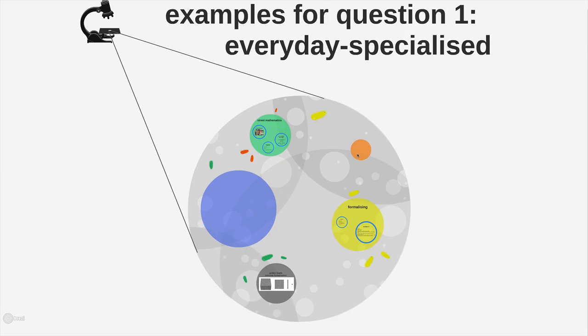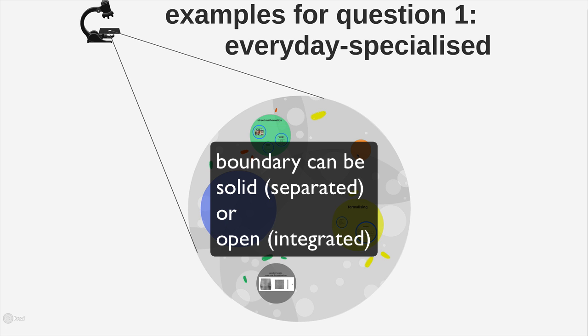Well, let's look at some examples now of how to work with the relationship between the everyday and the specialized. Remember in the previous video, we made a distinction about the boundary strength of the everyday specialized being either solid, in which case you separate the two off, or open, in which case you integrate the everyday and specialized.